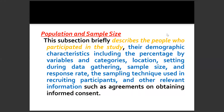Toward population and sample size, this subsection briefly describes the people who participated in the study, the demographic characteristics including the percentage by variables and categories, location setting during data gathering, sample size and response rate, and the sampling technique used in recruiting participants, and other relevant information such as agreements on obtaining informed consent.